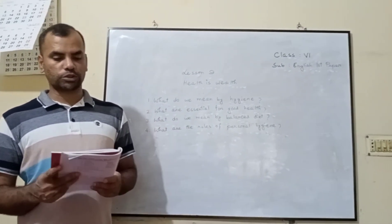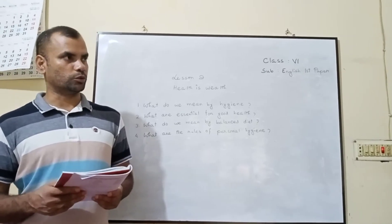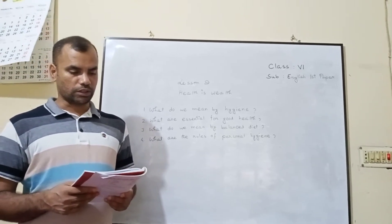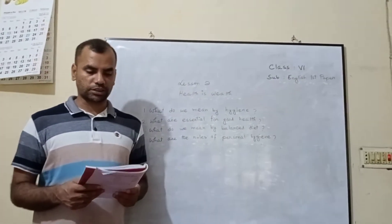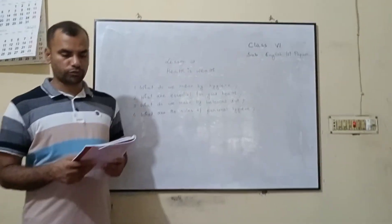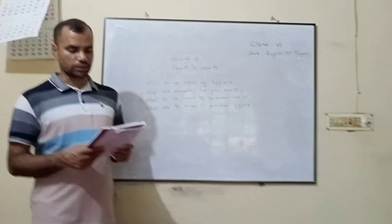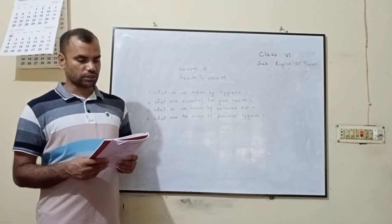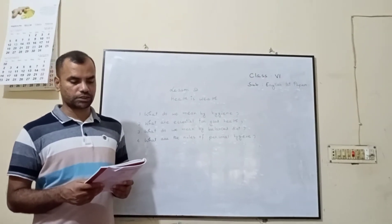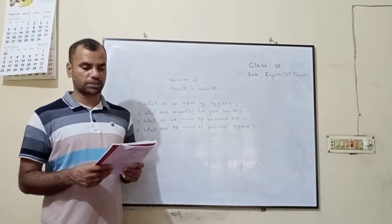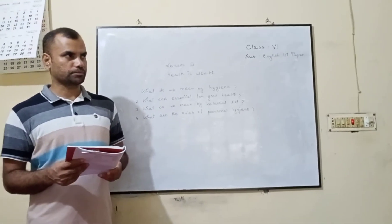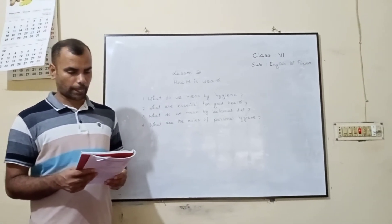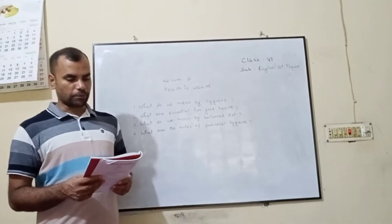Some important rules of good personal health are as follows. Number 8, balanced diet. Our food should contain the correct proportion of carbohydrates, fat, protein, vitamins, minerals, and water in it.